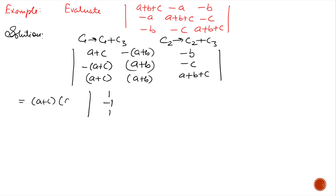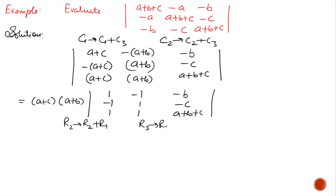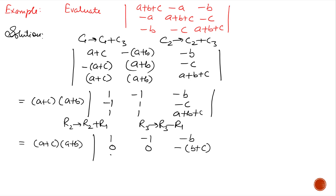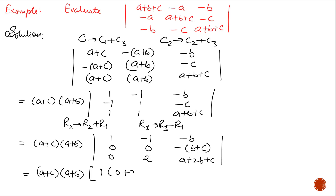First we take (a+c) common from the first column and (a+b) from the second column, and now in the first column we will make 1, 0, 0 using operations r2 replaced by r2 + r1 and r3 replaced by r3 - r1. The first row remains the same. In the second row we get 0, 0, -(b+c). Third row gives 0, 0, (a+2b+c). Expanding along the first row, we get (a+c)(a+b) multiplied by 2(b+c). The answer is 2(a+b)(b+c)(c+a).